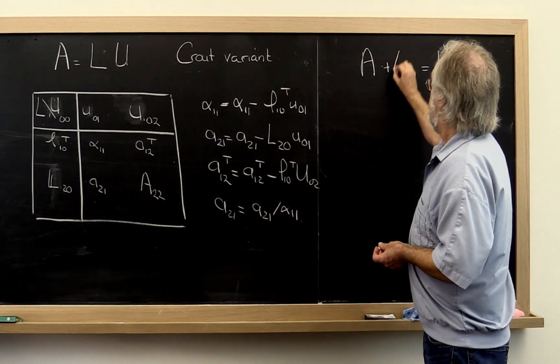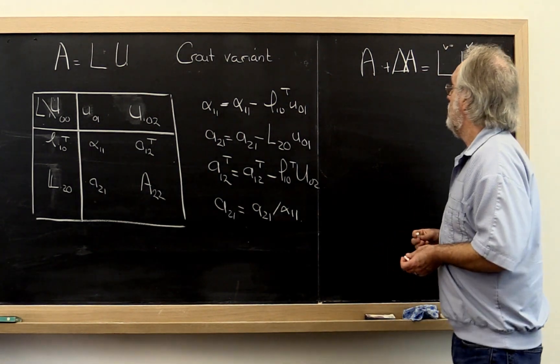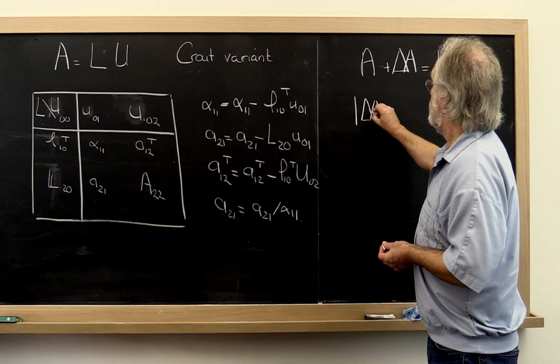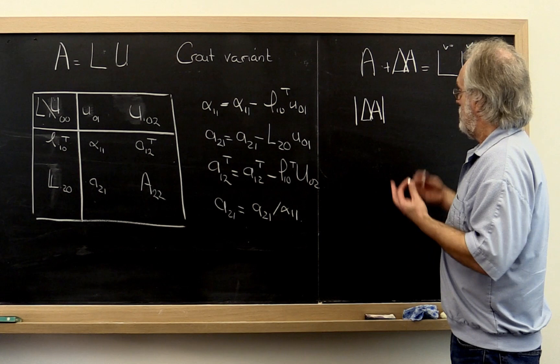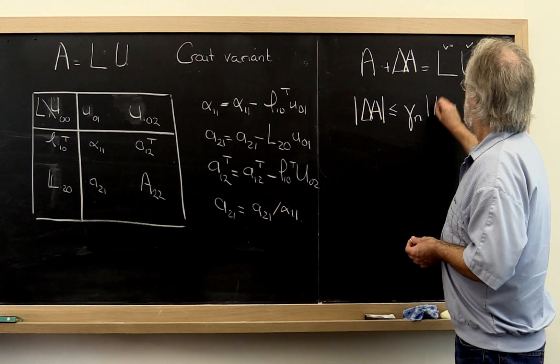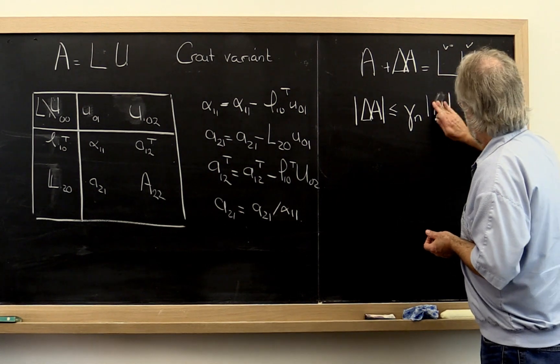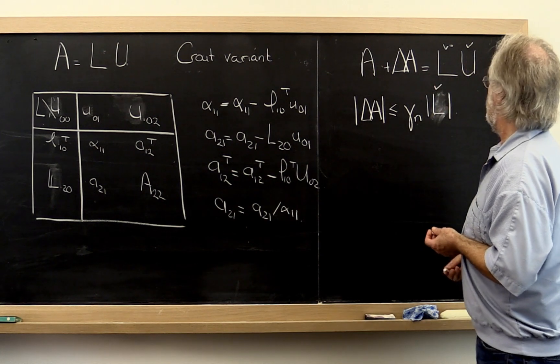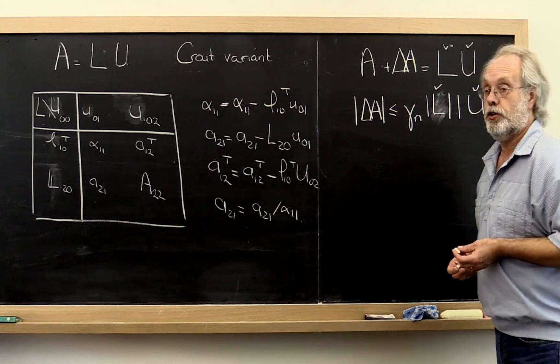Instead, it is the LU factorization of a slightly changed matrix, slightly perturbed matrix A. And you can put bounds on that perturbation. The absolute value of that matrix, element-wise absolute value, is bounded by gamma n times—no, that's what you would like. Actually, what you get is that it's gamma n times the absolute value of A times the absolute value of the computed L times the absolute value of the computed U.